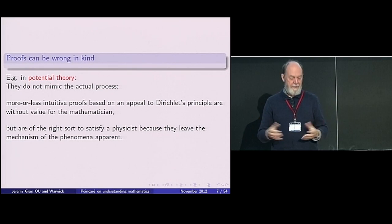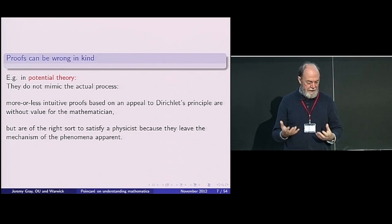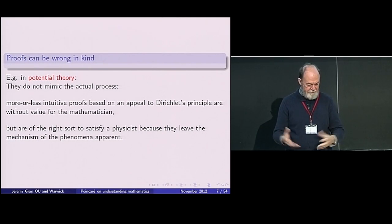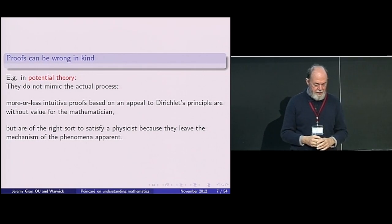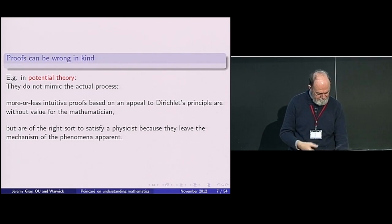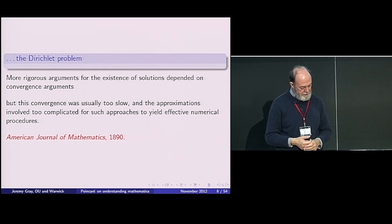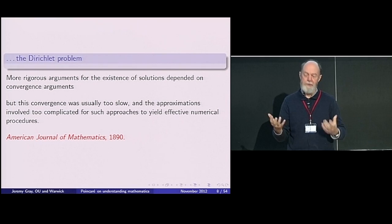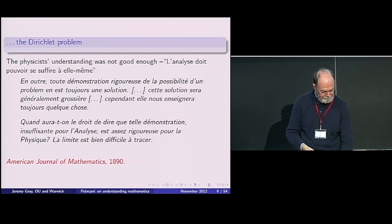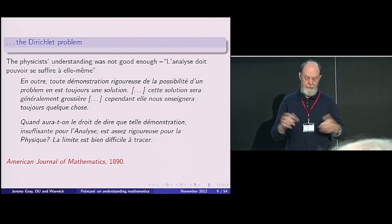Proofs can be wrong in kind. In the example of potential theory, you don't get in his day an intuitive proof based on the naive physics. You do get proofs. Poincaré is famous for giving the méthode de balayage. But you don't in that way copy the physicist's intuition. The mechanism of phenomena is not apparent.